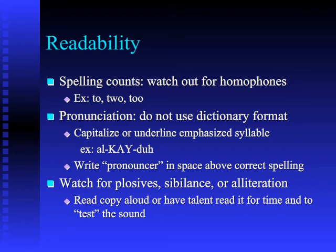Watch for plosives, sibilance, or alliteration. Plosives are the P's and B's — if you get too close to your microphone, your breath will pop off the mic and you'll have a bumping sound. That's easily corrected: move the microphone. This is an omnidirectional mic — you can put it anywhere around your mouth but not directly in front of it. Sibilance is that hard S sound: seven silly swans swam silently seaward. It takes more effort to get rid of, but it can be done — you just have to practice.